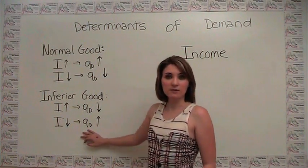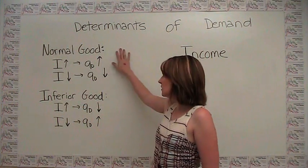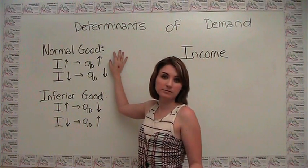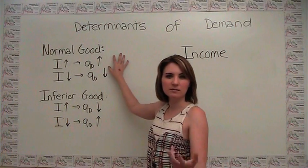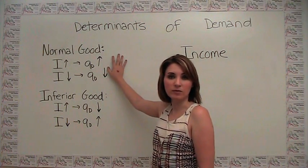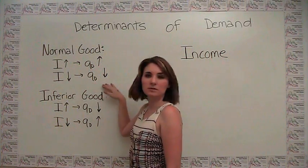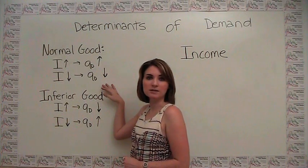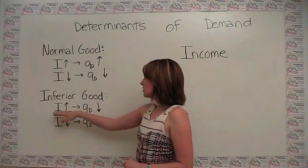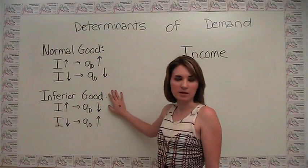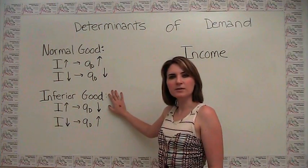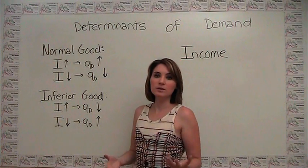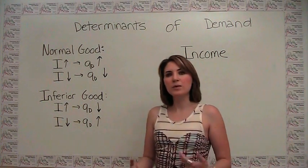For examples: in the normal good category, consider a luxury yacht — when your income goes up, you're likely to purchase more luxury yachts; when your income goes down, you demand fewer. An inferior good example is cheap beer. Empirically, it was shown that during the recession, sales of cheap beer such as Bud Light actually went up rather than down.